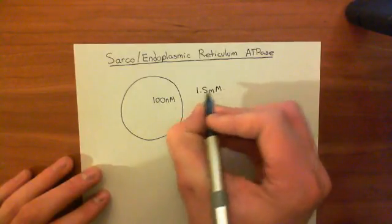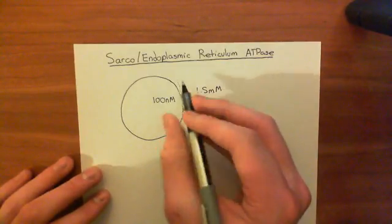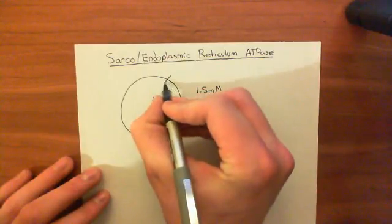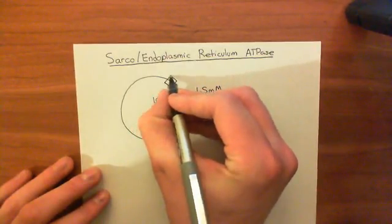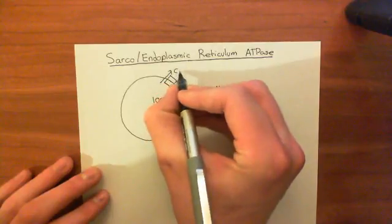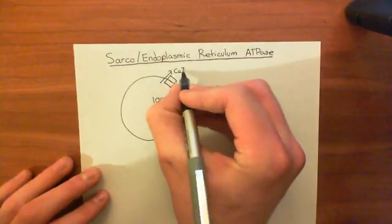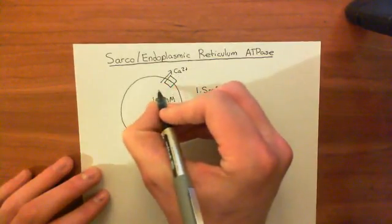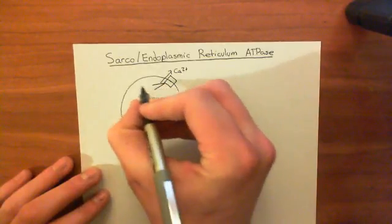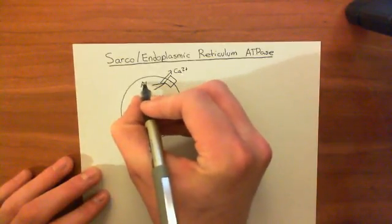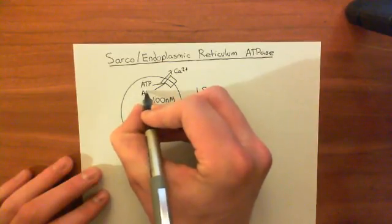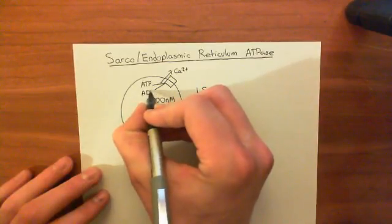We've discussed how you maintain that through having the plasma membrane calcium ATPase protein, which extrudes a single calcium ion for each ATP molecule that is hydrolyzed. So an ATP molecule comes in and is hydrolyzed to ADP and inorganic phosphate.